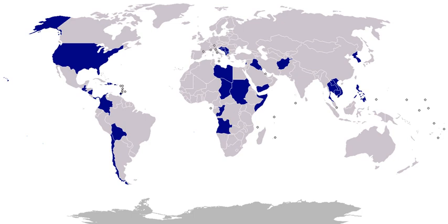1842, Mexico: Commodore Thomas ap Catesby Jones, in command of a squadron long cruising off California, occupied Monterey, California, on October 19, believing war had come. He discovered peace, withdrew, and saluted. A similar incident occurred a week later at San Diego. 1843, China: sailors and marines from the St. Louis were landed after a clash between Americans and Chinese at the trading post in Canton.